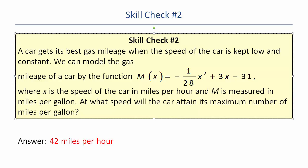Did you get 42? Remember the vertex is -b over 2a. And then if you plug that back in, that will tell you what the actual maximum mileage is. But that's not what they were asking for. They were asking for the speed, so they just wanted you to find the first part, the -b over 2a. All right, that's it for this.